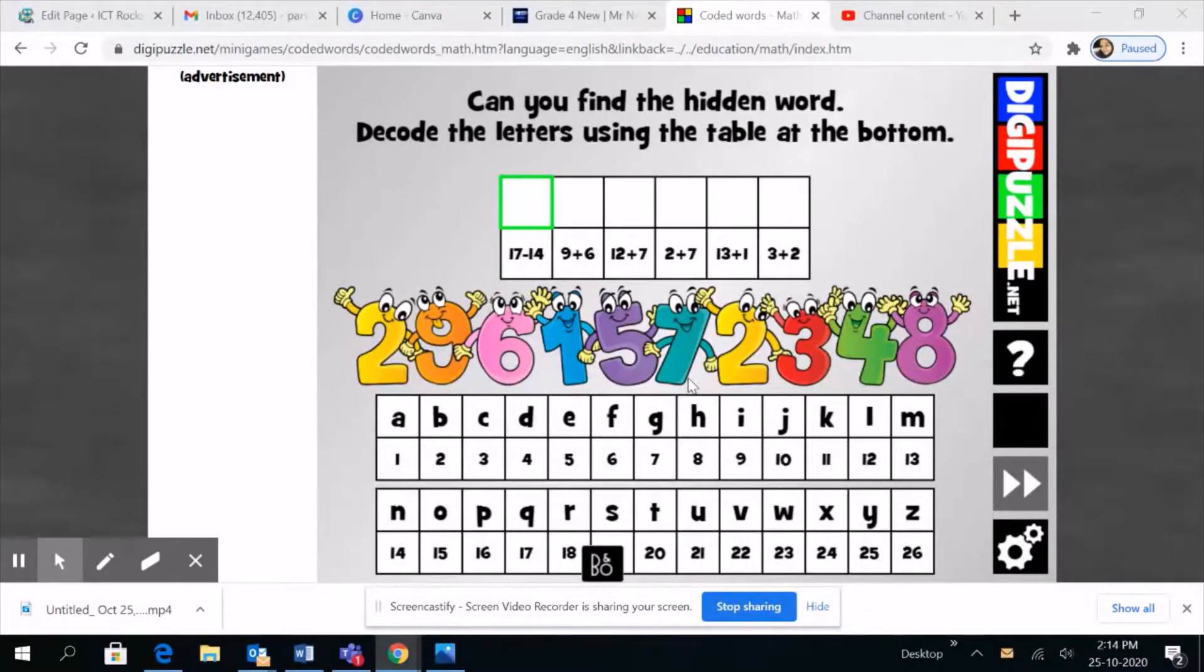Right, so there's a hidden word over here. You need to figure out what this hidden word is, but to figure out the hidden word you need to do a bit of math. So the first word is 17 minus 14.